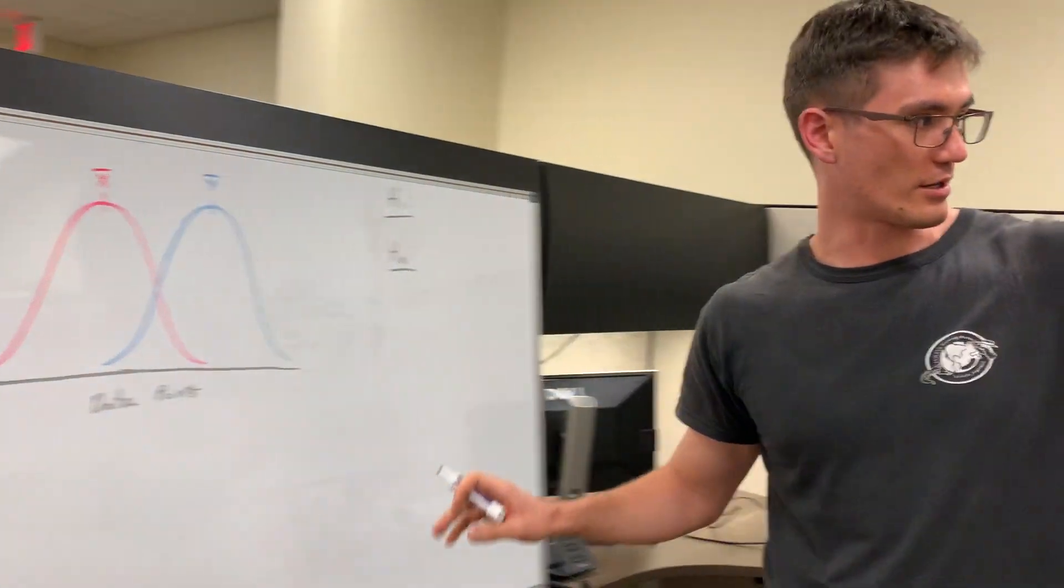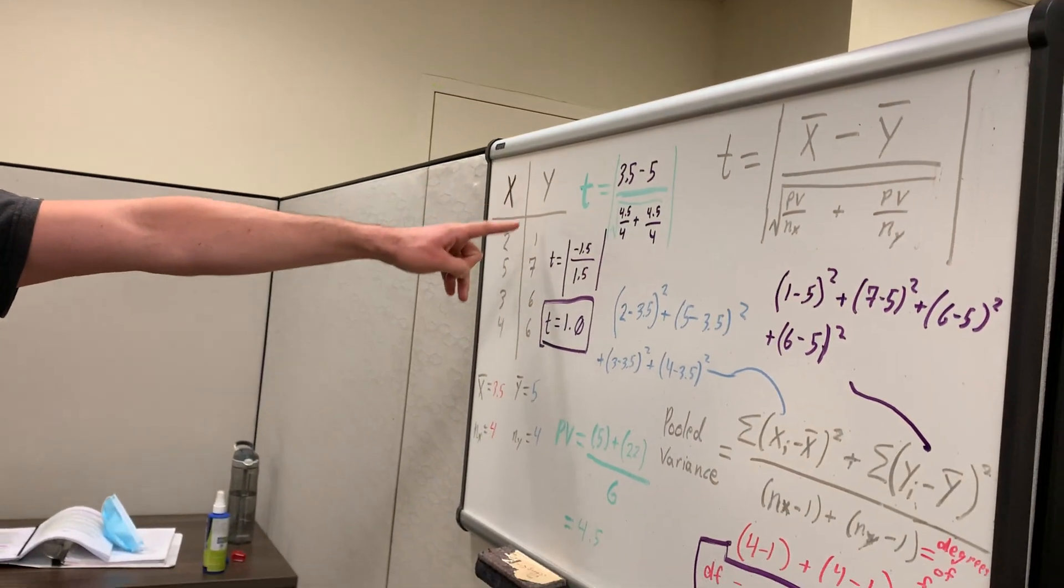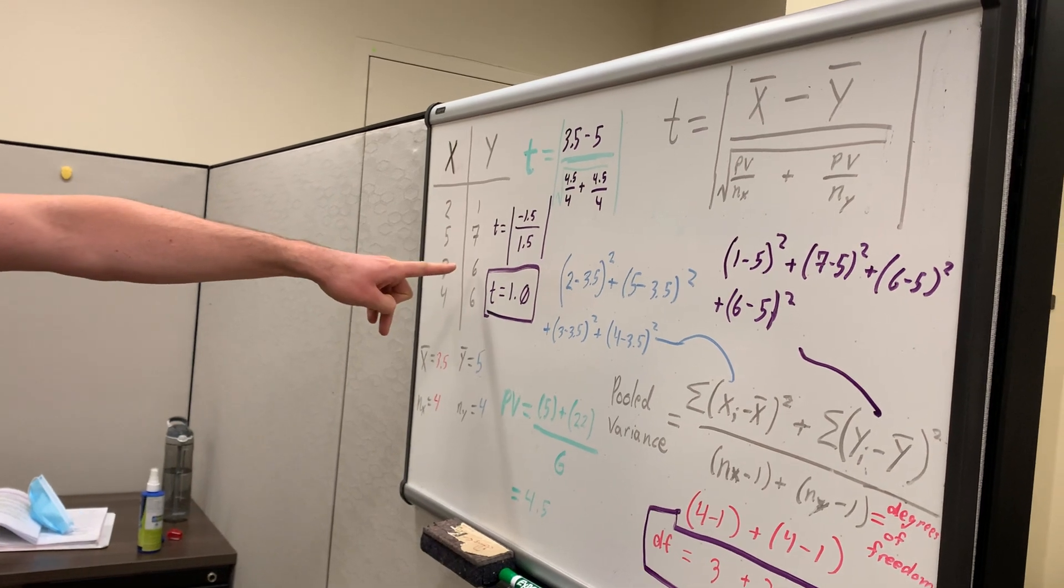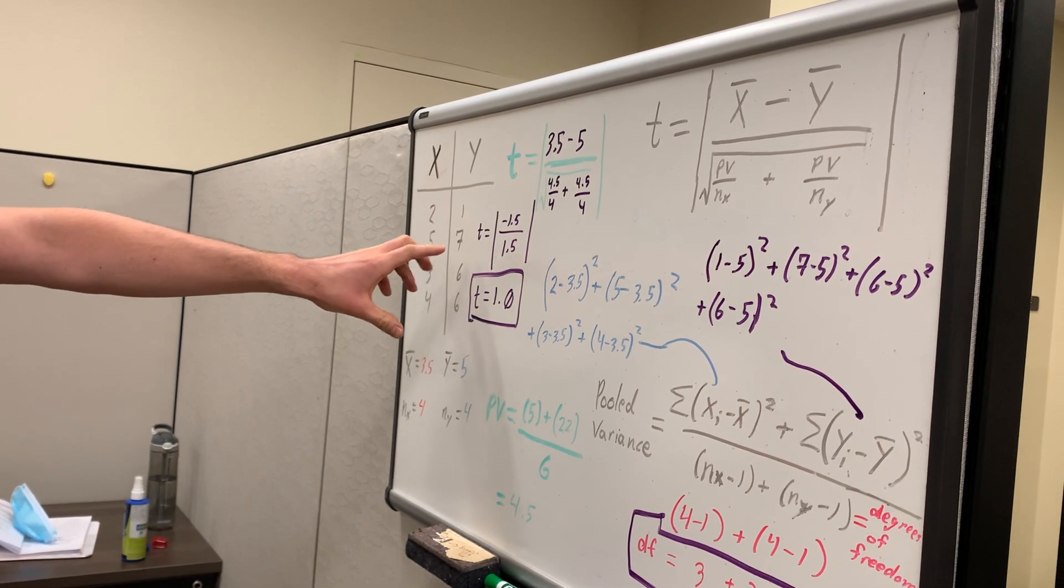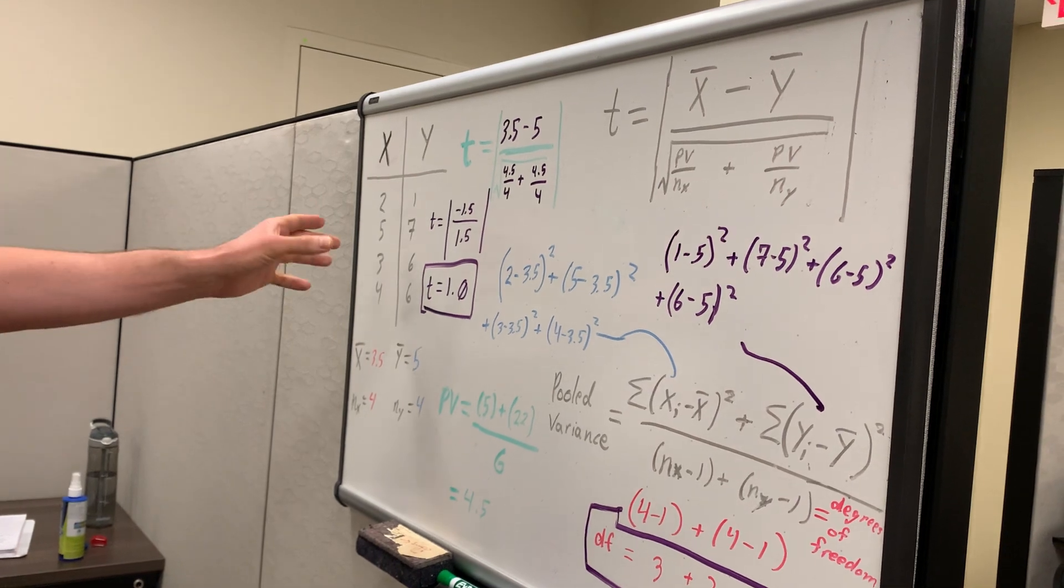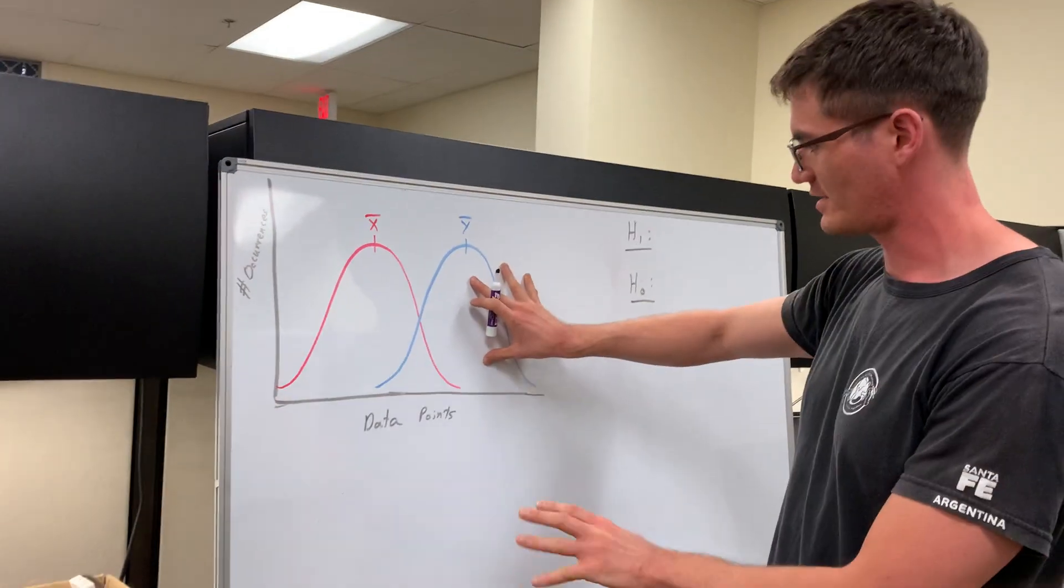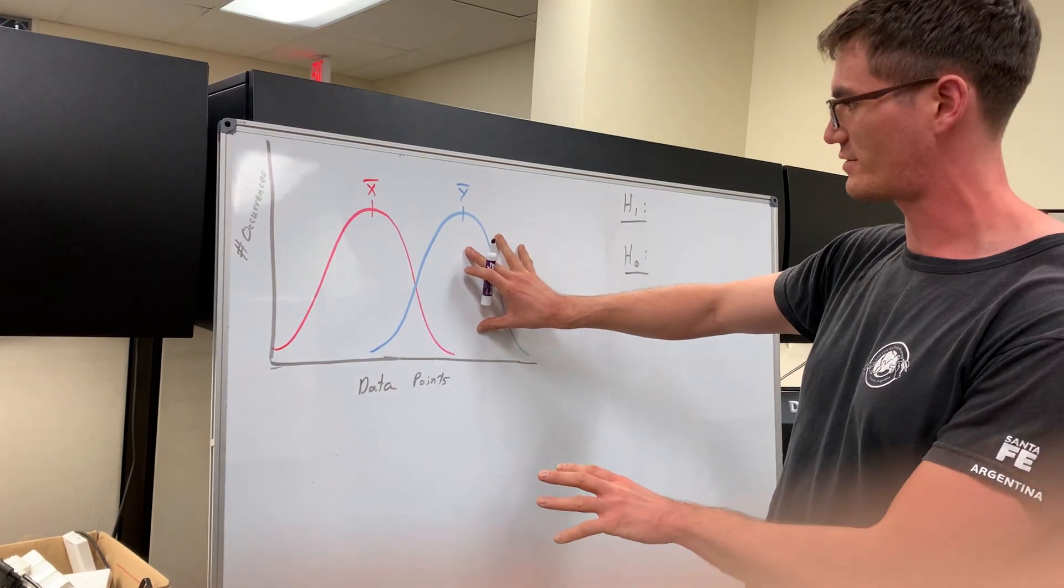And we could tell just by eyeballing these treatments over here that y bar looks like it should be bigger. The averages should be bigger. The histogram of treatment y should be bigger than the treatment x. So this is a relatively accurate representation of both treatments.